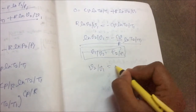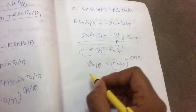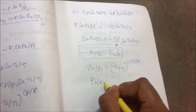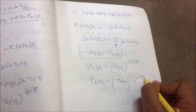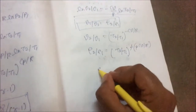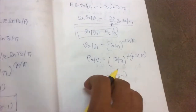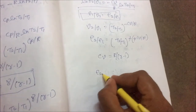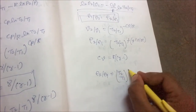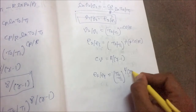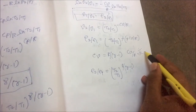Taking the antilog, V2/V1 equals (T2/T1) to the power of minus Cv/R. Therefore ρ2/ρ1 equals (T2/T1) to the power of minus Cv/R, which simplifies to ρ2/ρ1 equals (T2/T1) to the power of 1/(γ−1), since Cv/R equals 1/(γ−1).